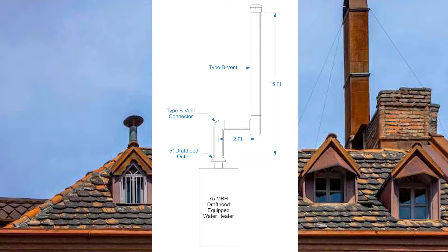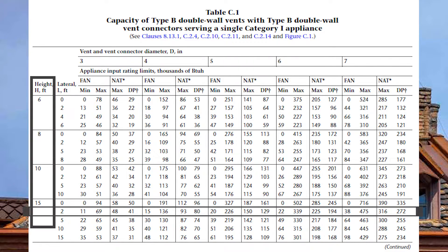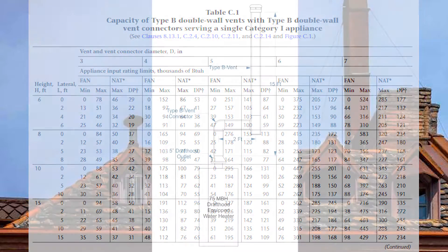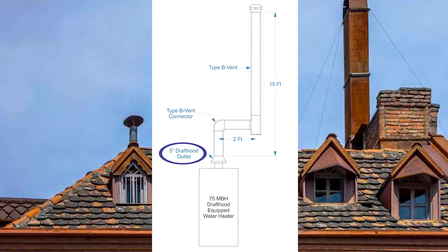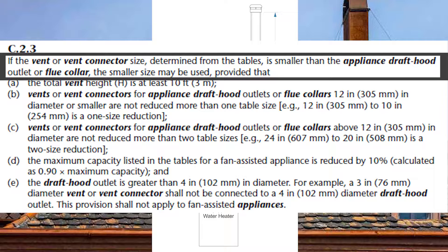To illustrate our first GVR, let's do a sizing example. I have a single draft hood equipped appliance that's 75,000 BTUs. It has a two-foot lateral and a 15-foot vent height, with a double wall vent connector going into a double wall vent. That means I go to Table C1, find 15-foot vent height and two-foot lateral, go across to four inch — good to 80,000 BTUs on NAT DP. So four inch will be my size, but notice the draft hood outlet is five inches. Can we do this? GVR C23 talks about a scenario where the vent sizing table suggests the vent or vent connector can be smaller than the actual draft hood outlet or flue collar of a gas appliance.